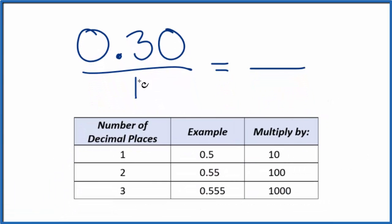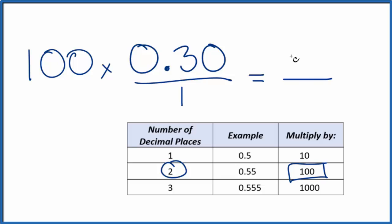We could, since we have two decimal places, 1, 2, we could multiply, if we have two decimal places, we could multiply by 100. And that's going to give us a whole number, 100 times 0.30, that's 30.